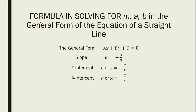There is a shortcut in finding the slope by just checking the coefficients of the general form. The slope m is equal to negative a over b. The y-intercept is equal to negative c over b. And the x-intercept is equal to negative c over a. This is the formula in finding the slope, the y-intercept, and the x-intercept.